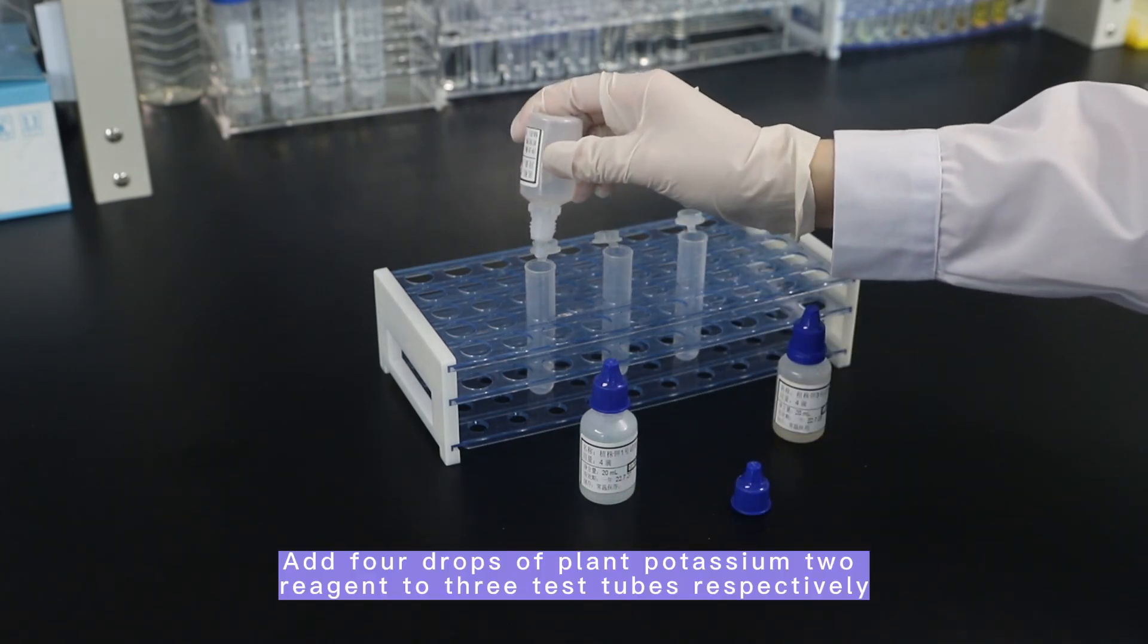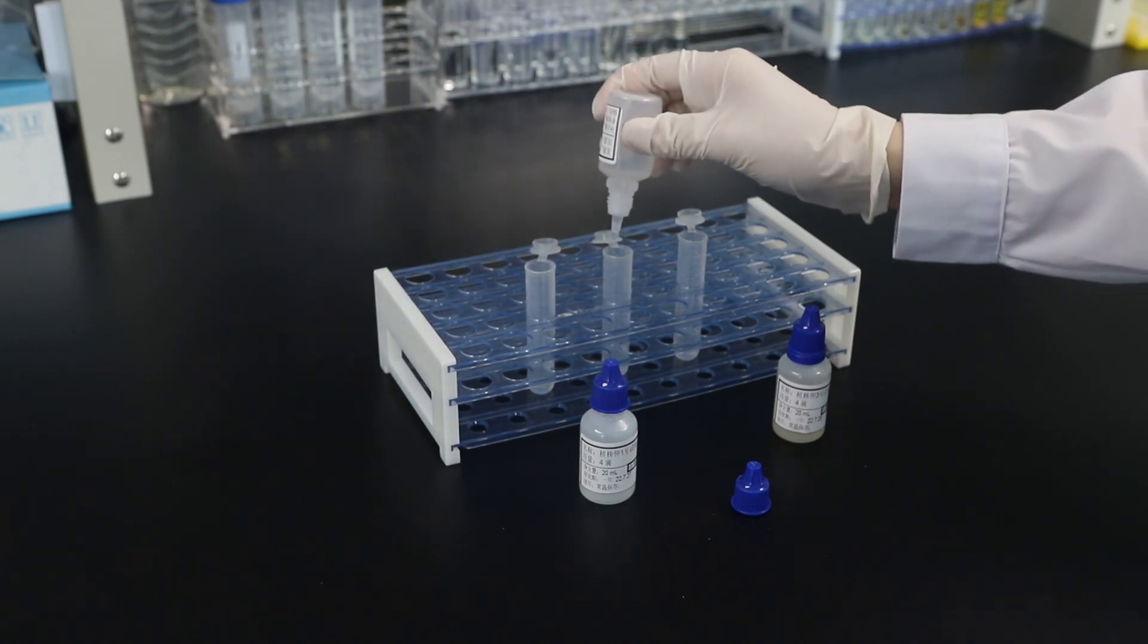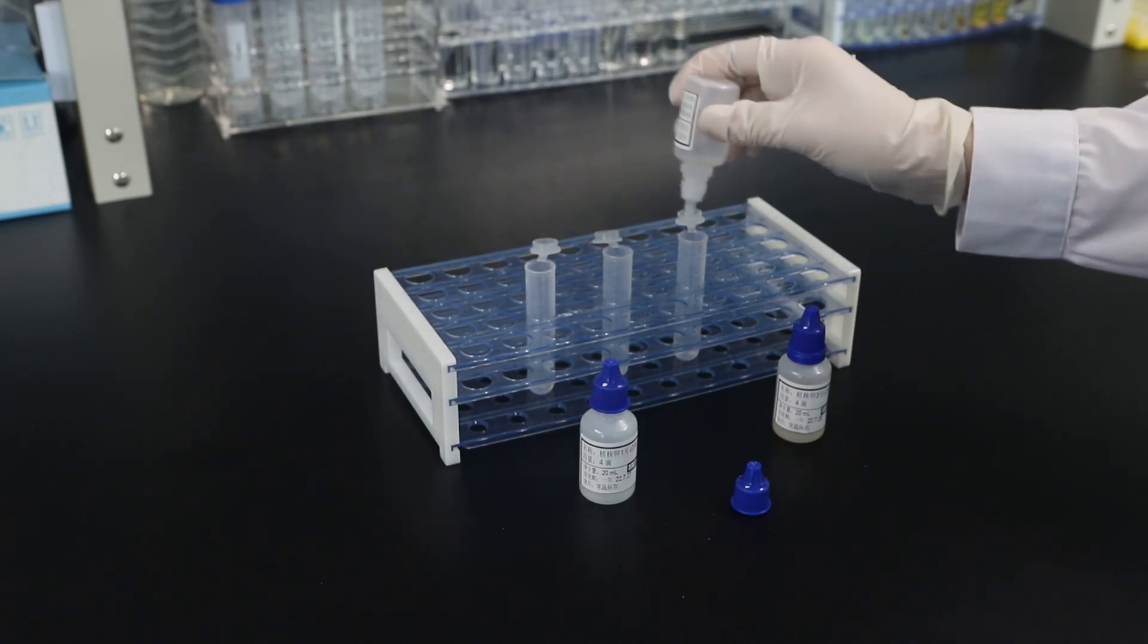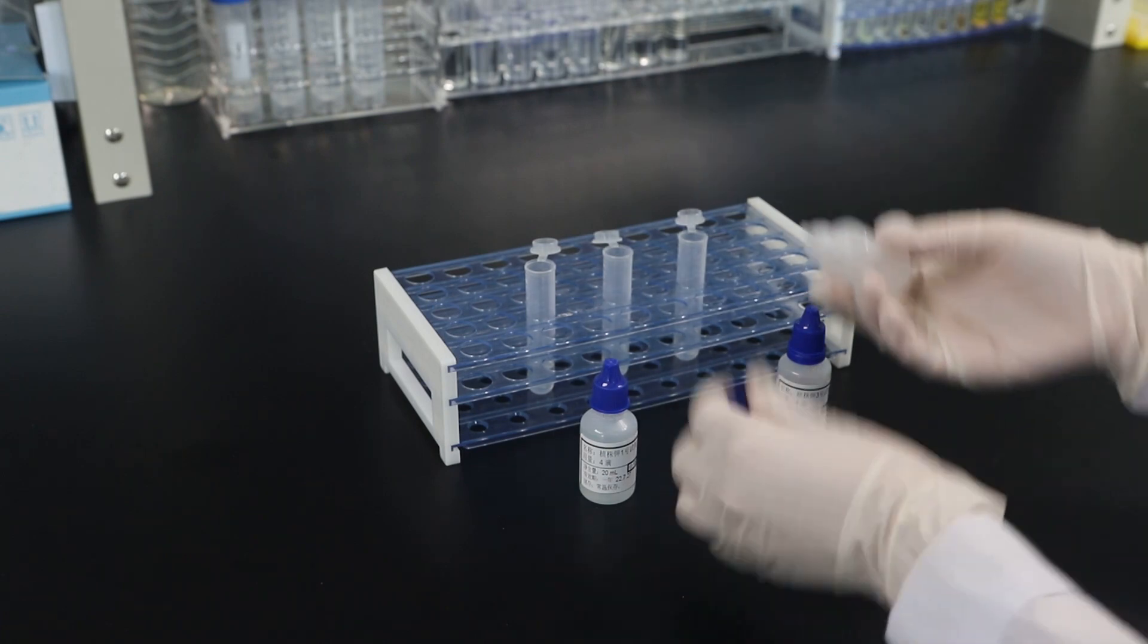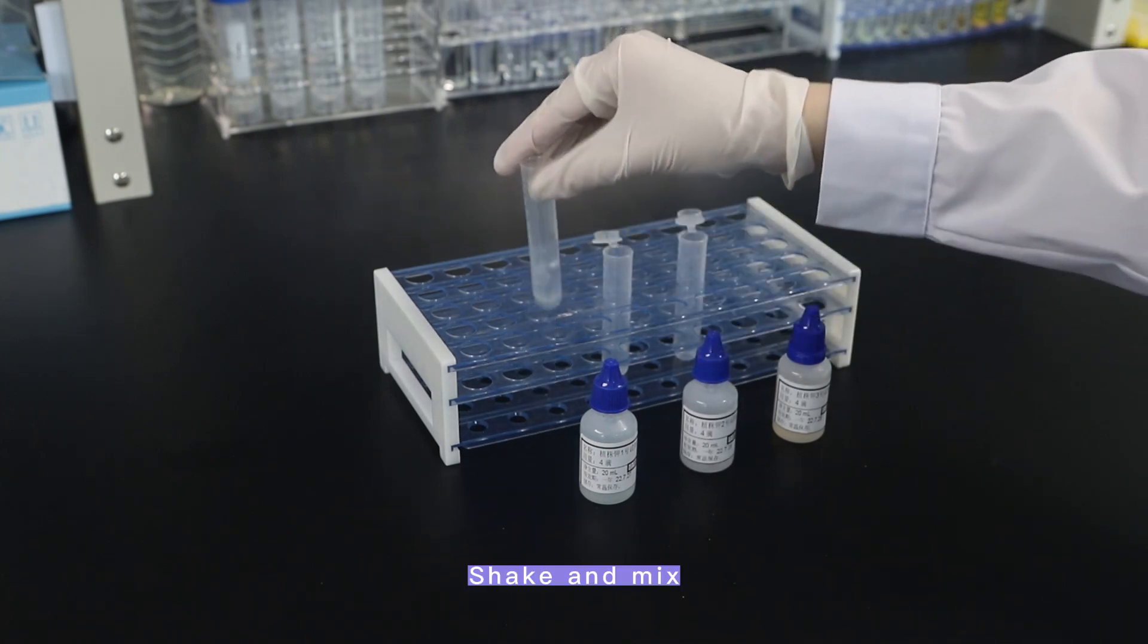Add four drops of plant potassium two reagent to three test tubes respectively. Shake and mix.